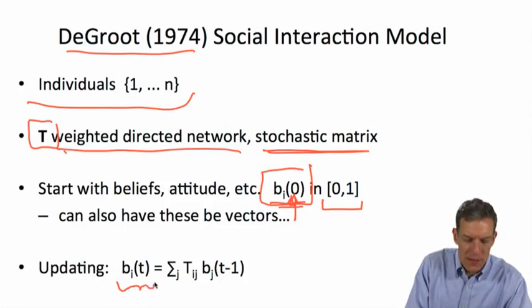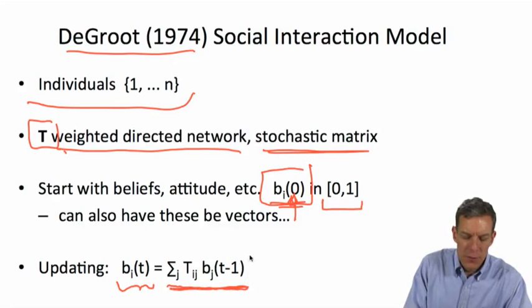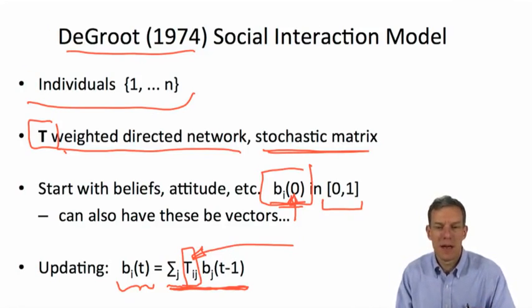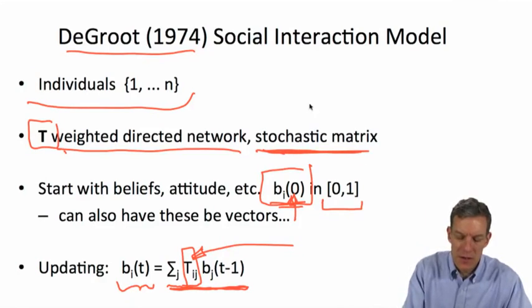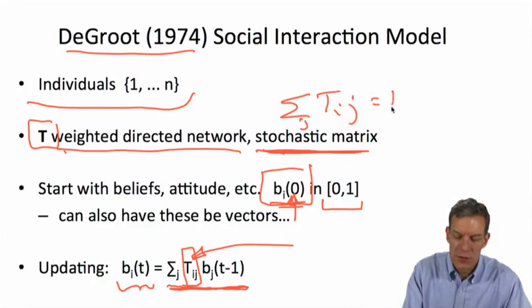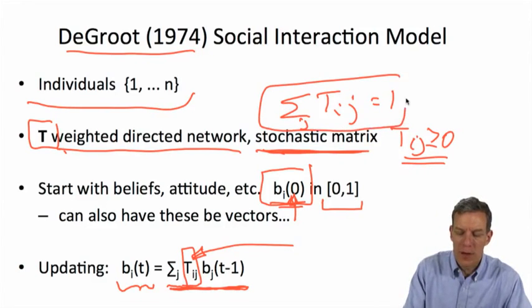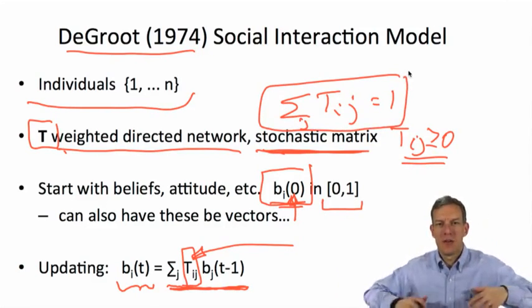You could have these be vectors. The model actually extends quite naturally to have multidimensional versions of beliefs and beliefs on many things and so forth. We'll just work with a simple case where you've got a belief and we'll keep it in [0,1]. So this is my belief of what's the probability that there is global warming. Now, the belief at time t that I have is just going to be a weighted average of the beliefs of my neighbors.